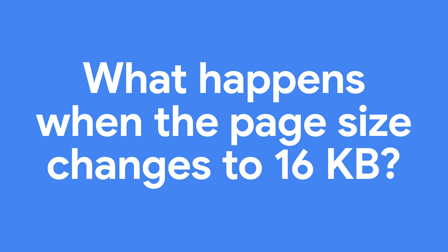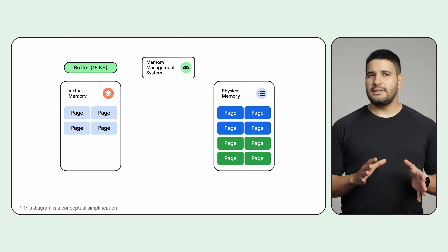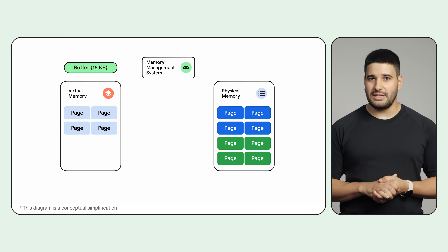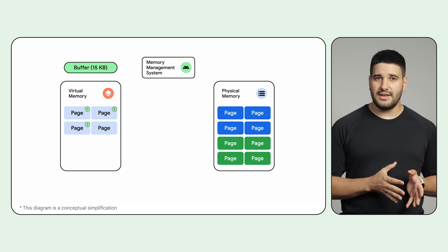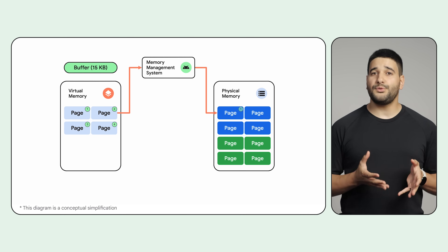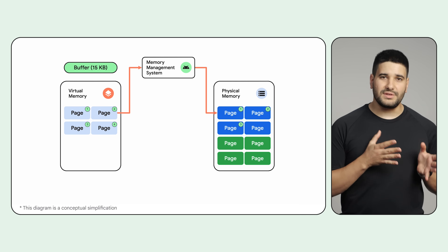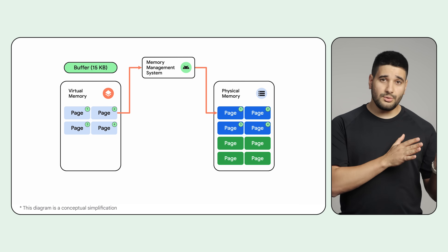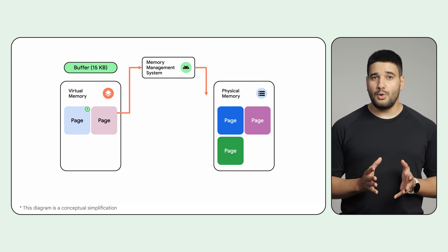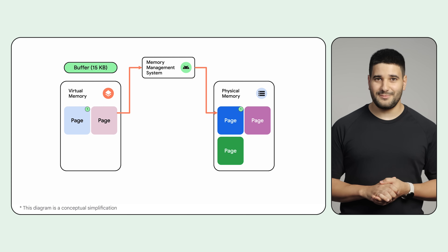What happens when the page size changes to 16 KB? Let's take a simplified example of your app accessing a 15 KB buffer stored in memory. On a 4 KB page size device, your app has to fetch 4 pages to get the entire buffer, and each of those 4 reads has to go through the system doing the lookup between virtual and physical memory. With a 16 KB page size, the same buffer fetching will require only one single memory page. In short, a bigger page size boosts memory access speed by reducing the system overhead associated with frequent address lookups.